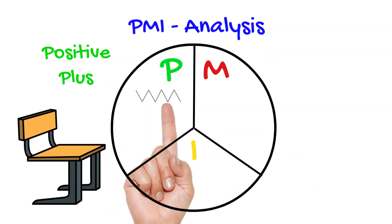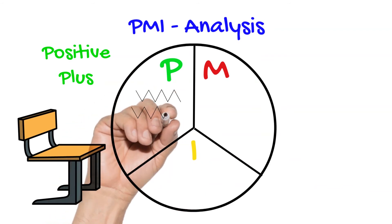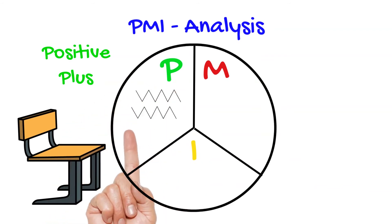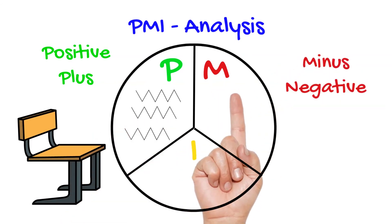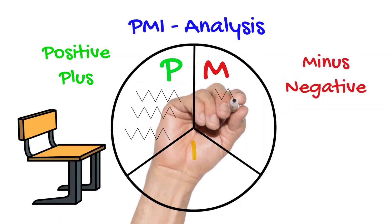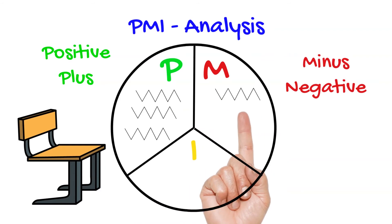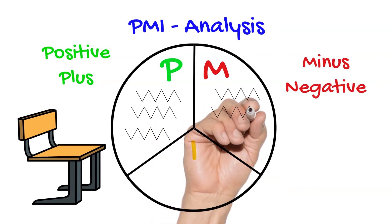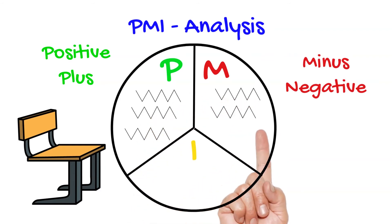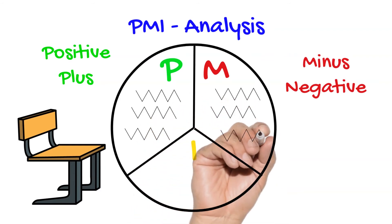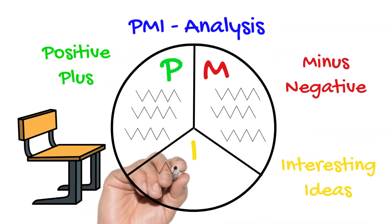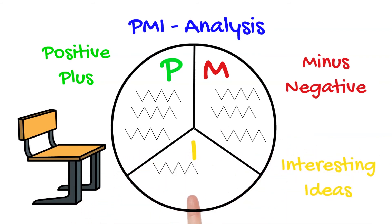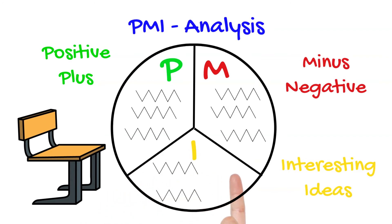In a PMI analysis, the P stands for positive or plus, the M stands for minus or negative, and the I stands for interesting or ideas. By looking at all the pros, cons, and interesting aspects of a design idea in each section, you can use this convergent thinking strategy to narrow down the most suitable outcomes and eliminate your lesser options.